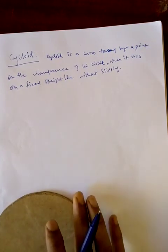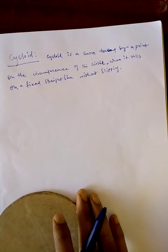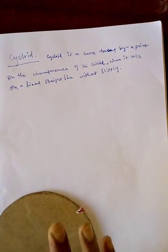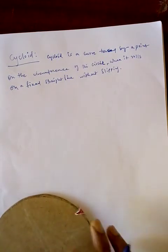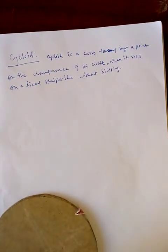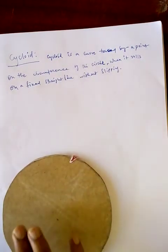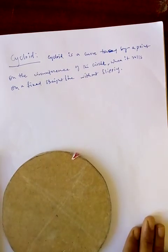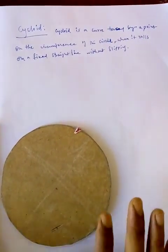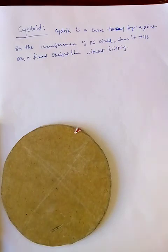Cycloidal curves are commonly used in kinematics — the study of motion — and in mechanisms that work with rolling contact. Cycloids, epicycloids, and hypocycloids are all very useful in the study of motion and rolling contact.